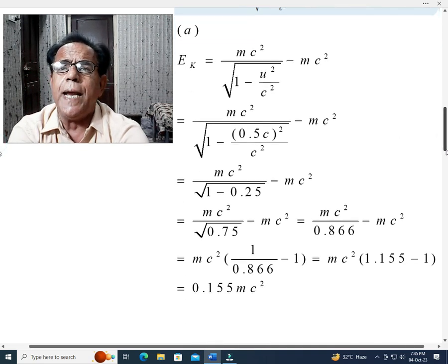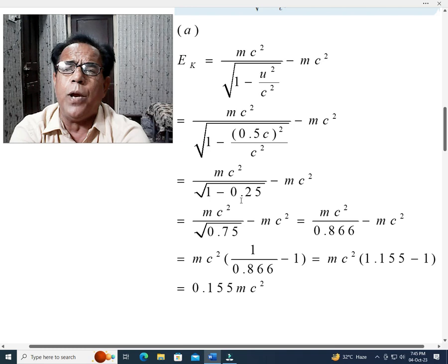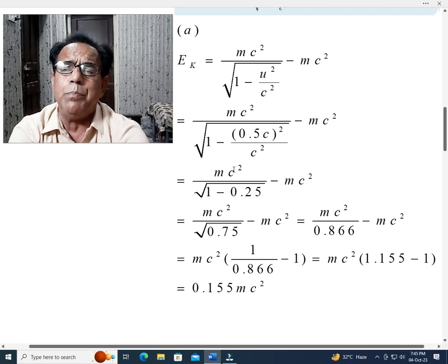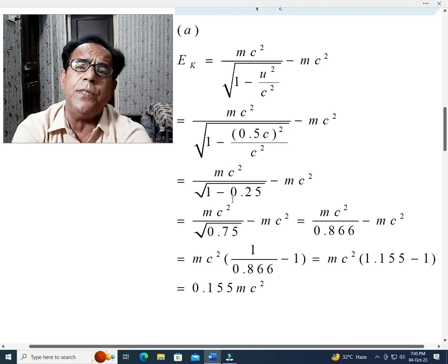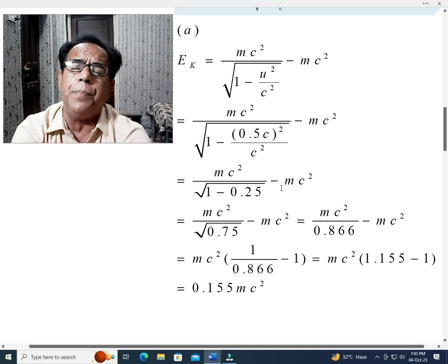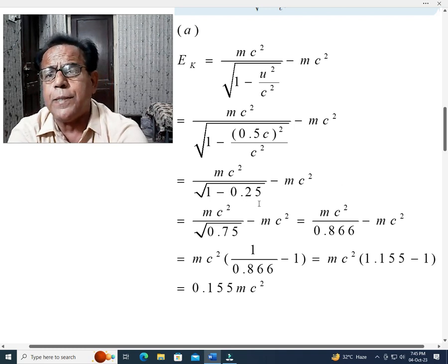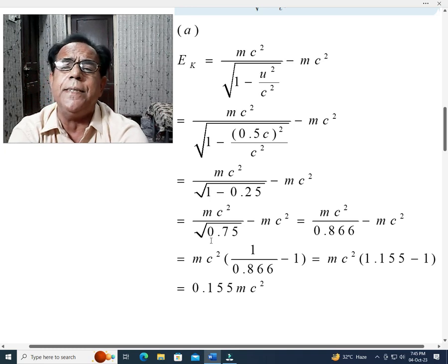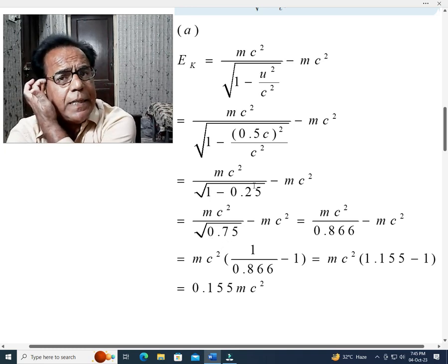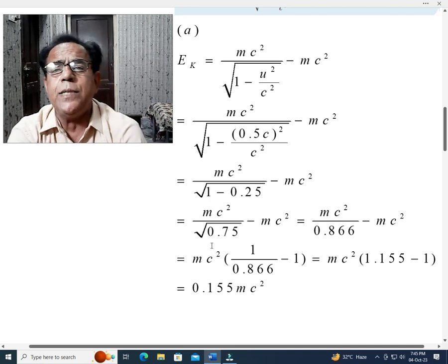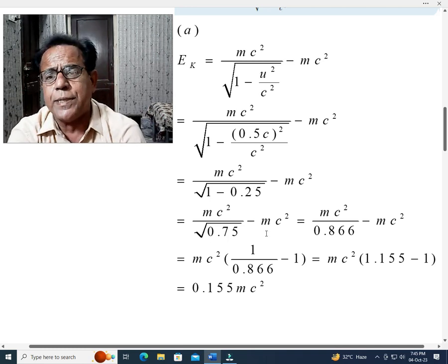We know that square of 0.5 is 0.25. While this c squared will be cancelled with this c squared. And hence mc squared over square root of 1 minus 0.25 minus mc squared. We know that when 0.25 is subtracted from 1, we get 0.75.